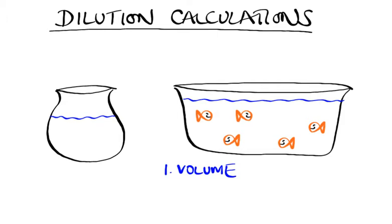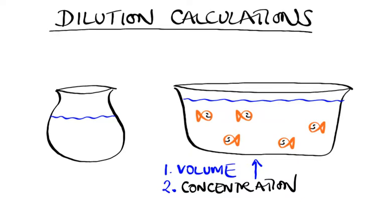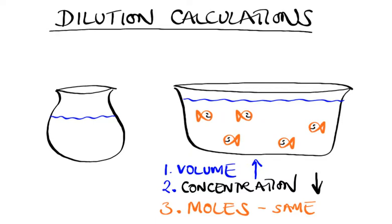First, the volume has changed — it increases going from the small goldfish bowl to the bath. Second, the concentration — the amount of fish in a certain volume — decreases as the volume increases. The fish represent the moles of acid, and the moles remain the same. So if we add more water, the volume goes up, the concentration goes down, but the moles remain the same.